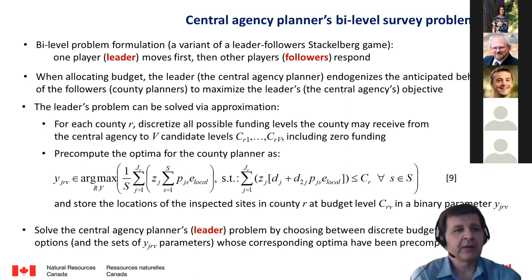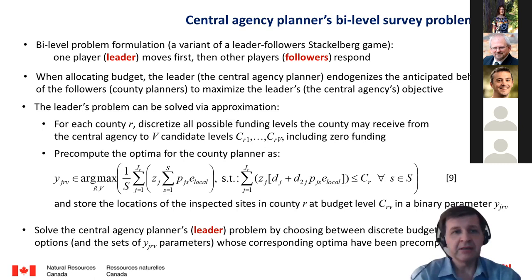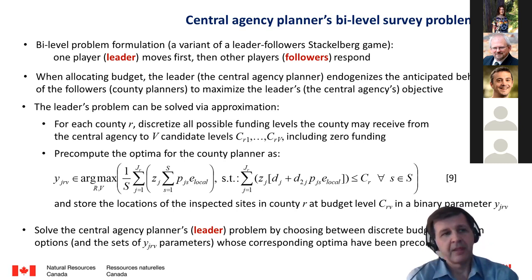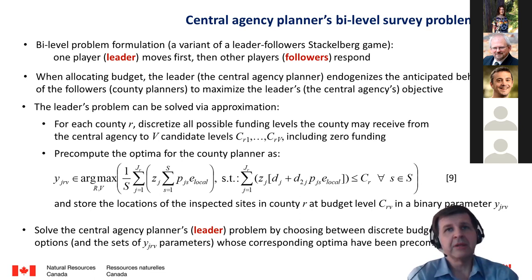We solve this game using bi-level optimization in two steps. First, for each county, we discretize all possible budget levels the county may receive from the central agency, including zero budget. Then we compute the optimal solutions for each county planner for all funding possibilities they may receive from the leader, and store the locations of inspected sites in a binary parameter. Then we use this binary parameter to solve the central agency problem by choosing between discrete budget allocations to the counties based on their pre-computed optimal solutions. The reason we use bi-level optimization is that the county-level problem is a mixed integer programming problem, and the only way to solve it is through this bi-level approximation.